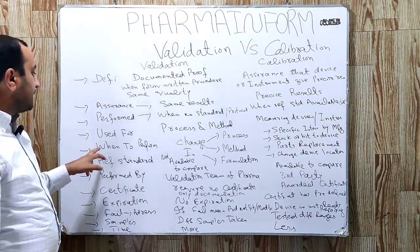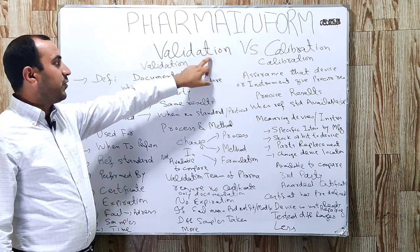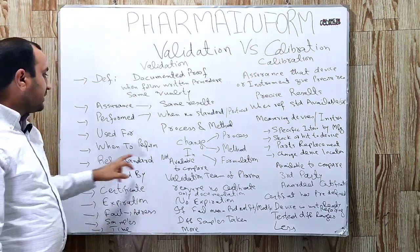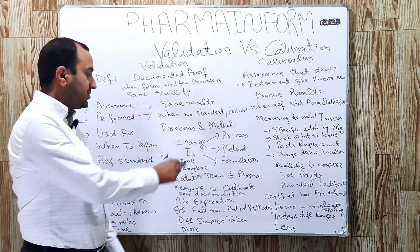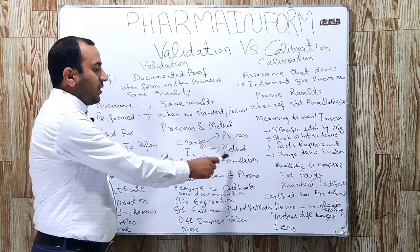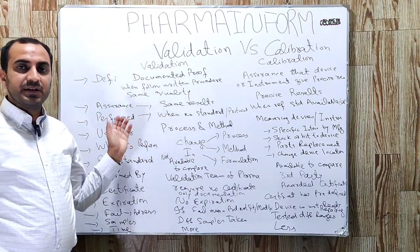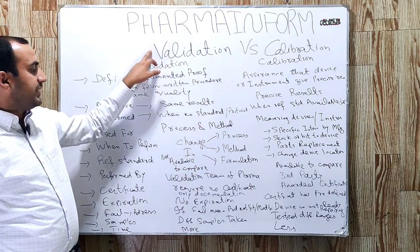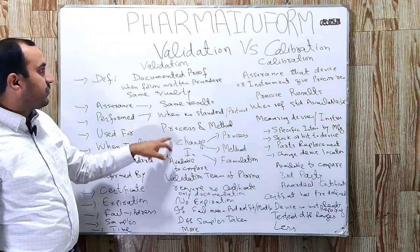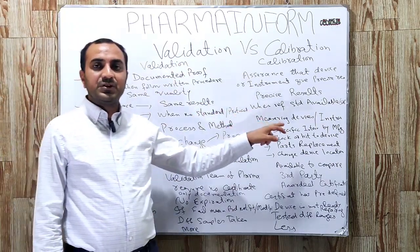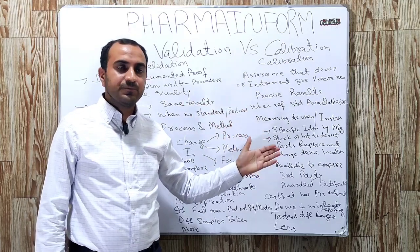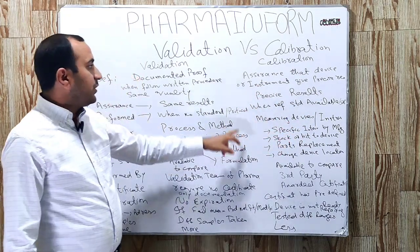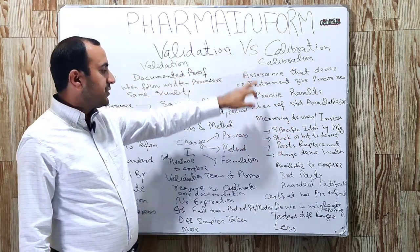Validation is performed when there is any change in the process, method, or formulation. Calibration is performed after specified time intervals provided by the manufacturer of the device or instrument.